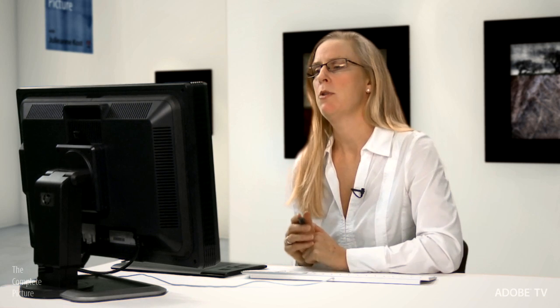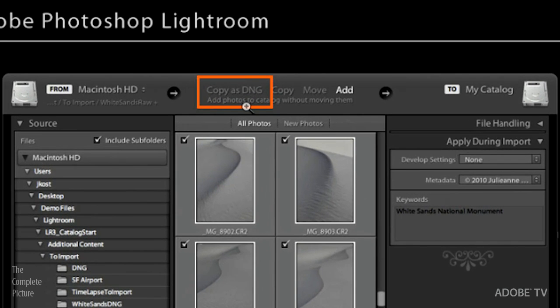Now, what if you're in Lightroom? In Lightroom, I'll show you three quick ways that you can convert. First way is on import. So as you import your files in the new import dialog box, you can copy as DNG. So that would be the first way.